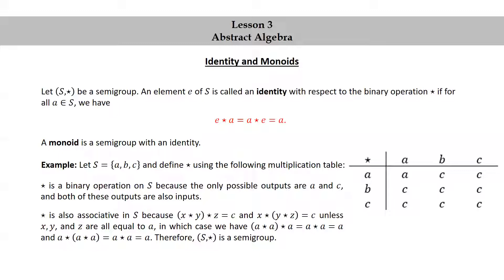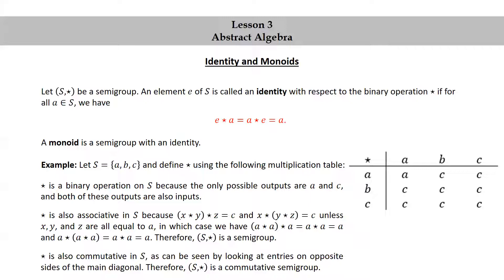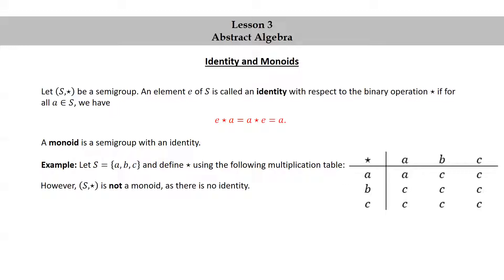S★ is also commutative, as can be seen by looking at entries on opposite sides of the main diagonal. Therefore, S★ is a commutative semigroup. However, S★ is not a monoid, as there is no identity.